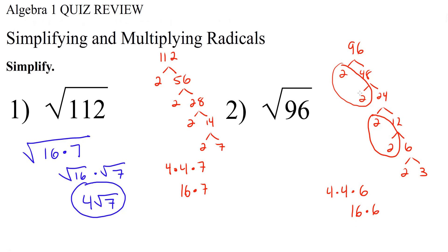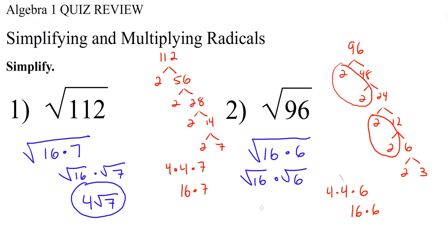That's 96. So we can break radical 96 into radical 16 times 6, then separate them into radical 16 times radical 6. The square root of 16 is 4, so this becomes 4 radical 6, and that's our final answer. And no, they're not all going to be 4 radical something — it is just a coincidence that on this review sheet these first two ended up being 4 radical something.